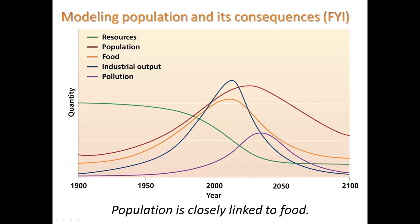This graph shows that population is closely linked to food. As population is rising, it's also following the trend of food production rising. Since the early 1900s, through industrial agricultural techniques, synthetic fertilizers, and what we call the Green Revolution — which we'll learn about next week — food production has increased remarkably throughout the last 100 years.